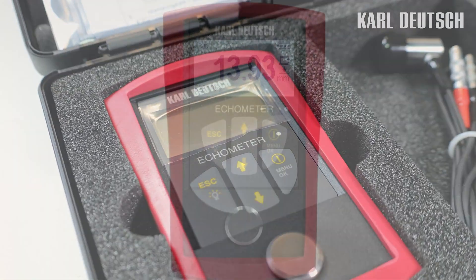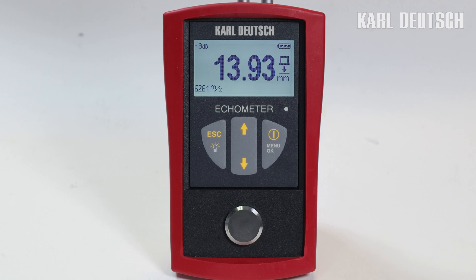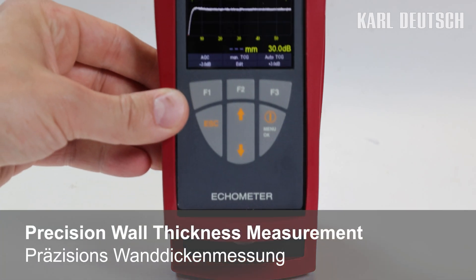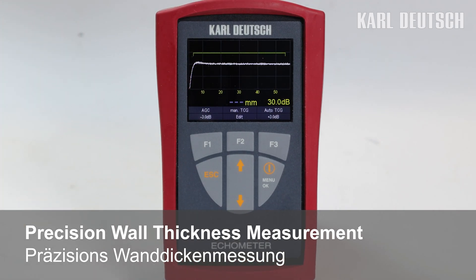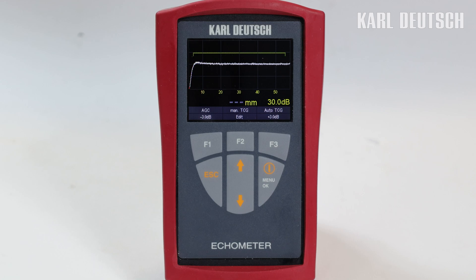As you can see, measuring wall thickness with an ECHOMETER 1076 is quick and easy. If you want more, take a look at our ECHOMETER 1077 with an A-scale display. You can find the link in the video description. Thanks for watching our video. See you next time.